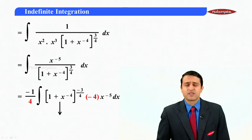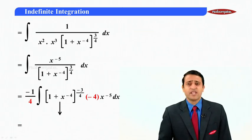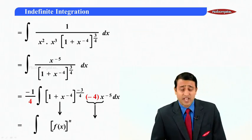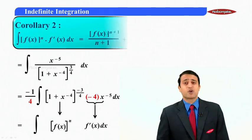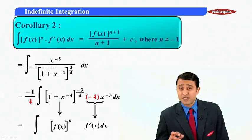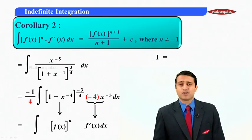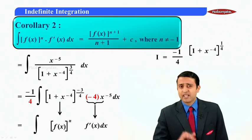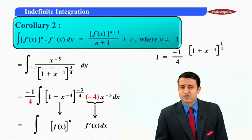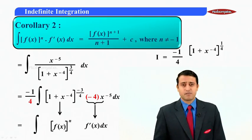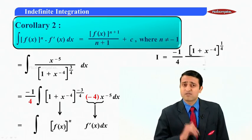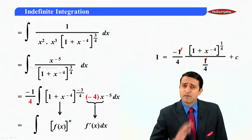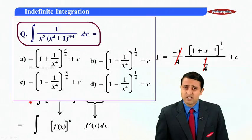Now can I say the integral is in the form of f of x raise to n into f dash of x. And by the shortcut we know it is nothing but f of x raise to n plus 1 upon n plus 1. So can I say that minus 1 by 4 outside? And then we have 1 plus x raise to minus 4 the whole raise to 1 by 4 in this case because minus 3 by 4 plus 1 is 1 by 4 divided by 1 by 4 plus c. Can I say 1 by 4 and 1 by 4 will get cancelled?